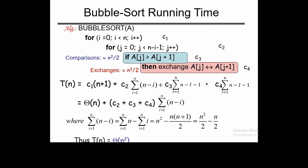The complexity of bubble sort will be theta of n squared in every case — best case, worst case, and average case. This is a high-cost algorithm compared to insertion sort. Insertion sort has theta of n squared in the worst case, but theta of n in the best case.